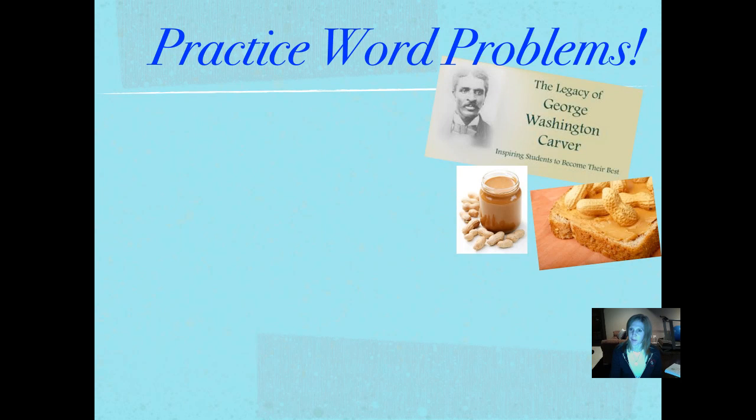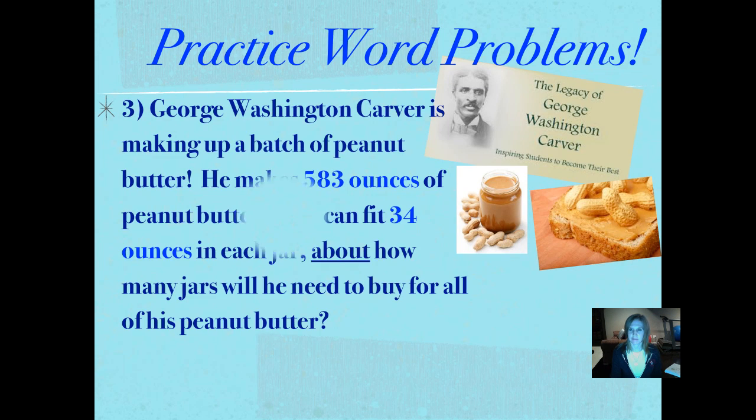Here is our practice word problem for tonight. George Washington Carver is making up a batch of peanut butter. He makes 583 ounces of peanut butter. If he can fit 34 ounces in each jar, about—that's our key word—how many jars will he need to buy for all of his peanut butter?